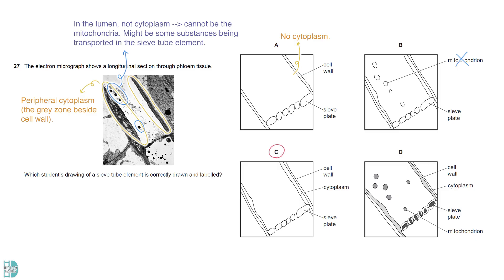C is the answer. D is wrong as mitochondria are labeled. And shading is not acceptable in a scientific drawing.